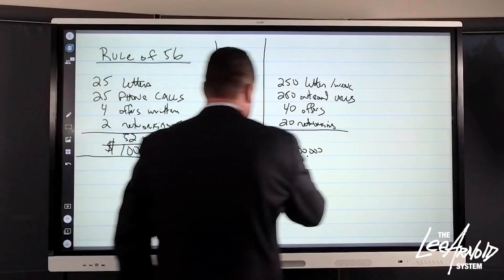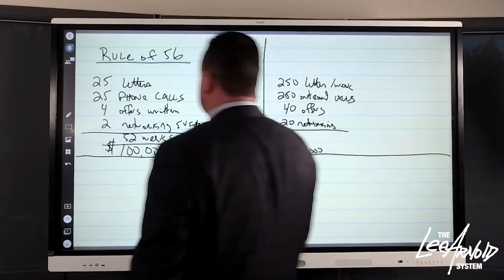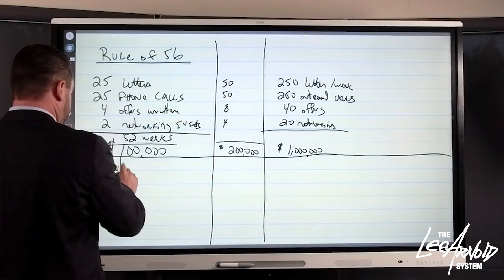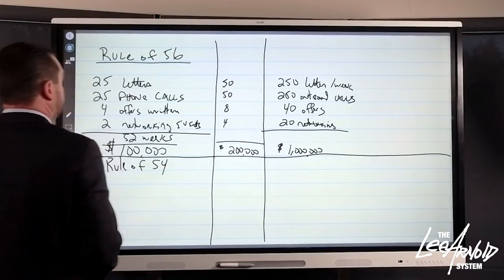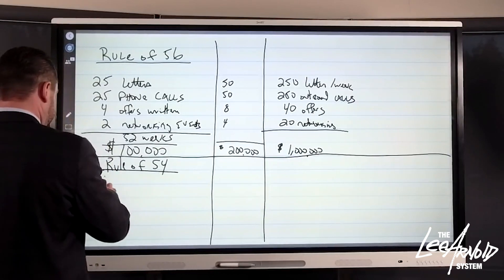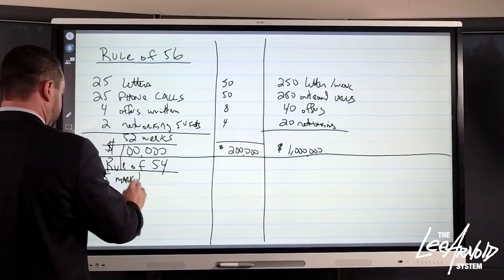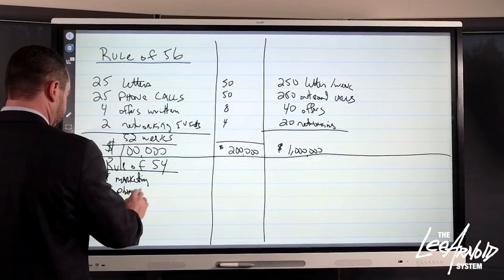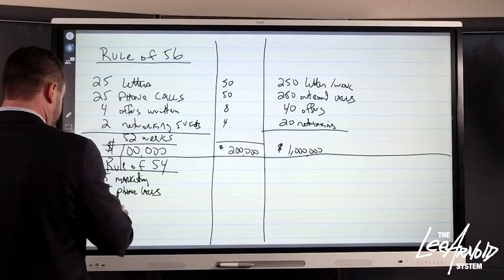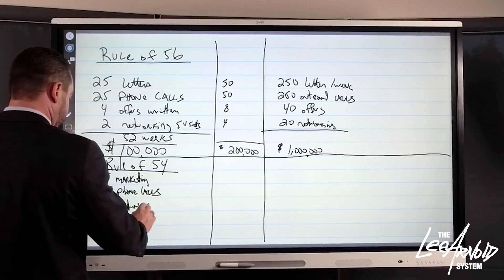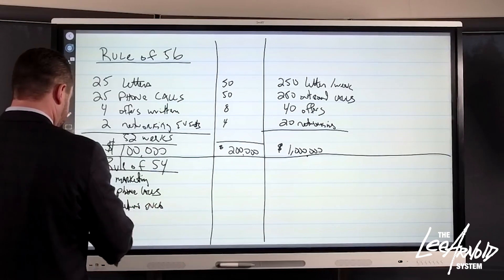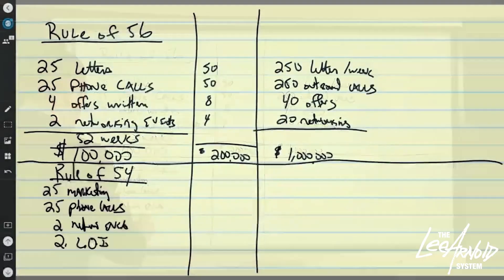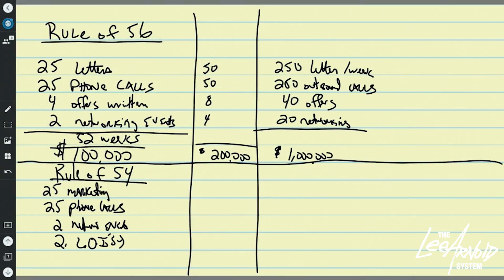Now, for those of you that are certified private money brokers, master brokers, broker of records, for you guys, you know that we have the rule of 54. Same thing, 25 marketing pieces, 25 phone calls, two networking events, and we're going to send out two LOIs. Those are letters of intent. So these are offers to fund people's deals. And if you will simply do these things, you generate a hundred thousand dollars per year.